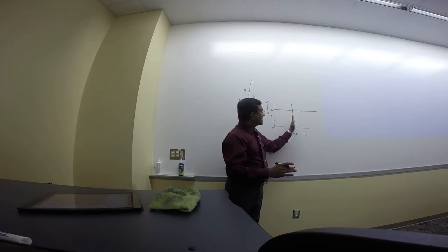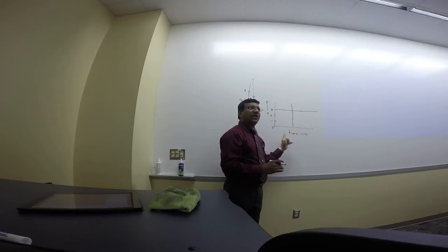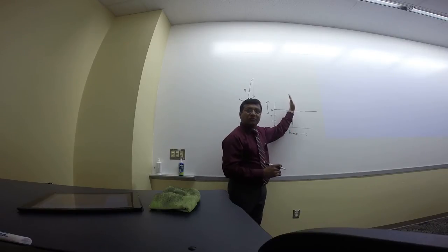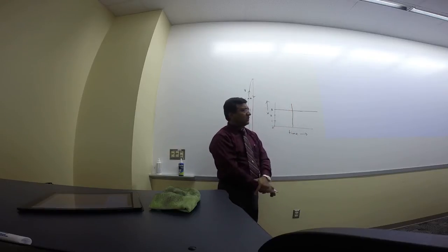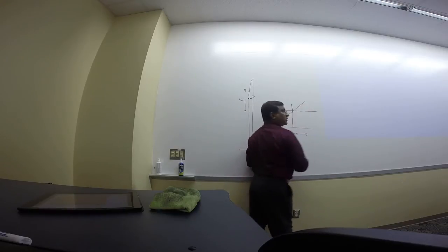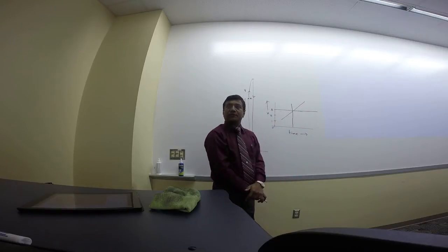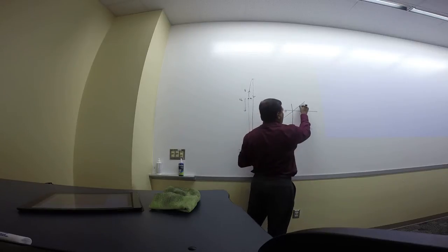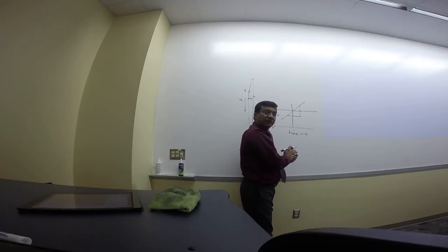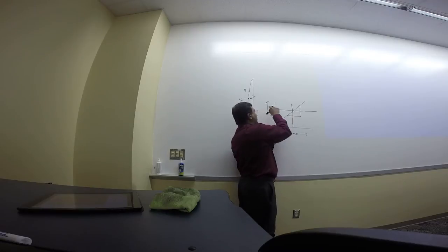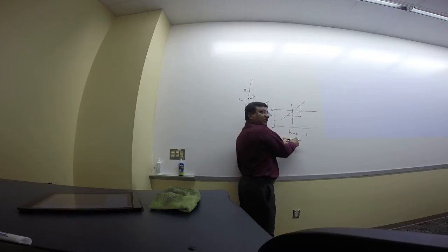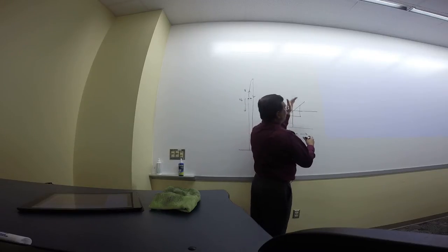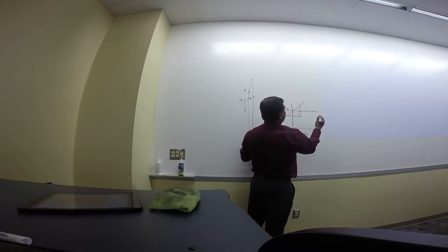For a vertical line on a position-time graph: time is not changing but position is changing. That would be an object moving at constant speed — actually, the slope dx/dt gives you velocity. A diagonal line gives constant speed, but a vertical line gives infinite slope. So velocity is the slope of the position-time graph.